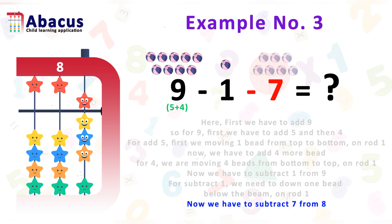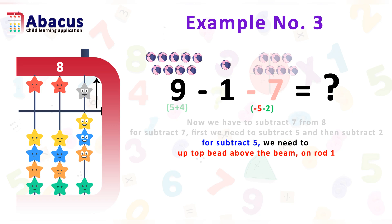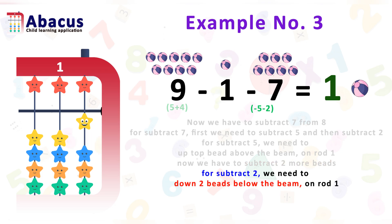To subtract 7 from 8: on the bottom we have 3 beads and on the top we have 1 bead representing the value 5. So first we subtract 5 from the top by moving the top bead above the beam on rod 1. Now on the bottom we have 3 beads, and we subtract 2 more by moving 2 beads down below the beam on rod 1. Here we get the answer 1.